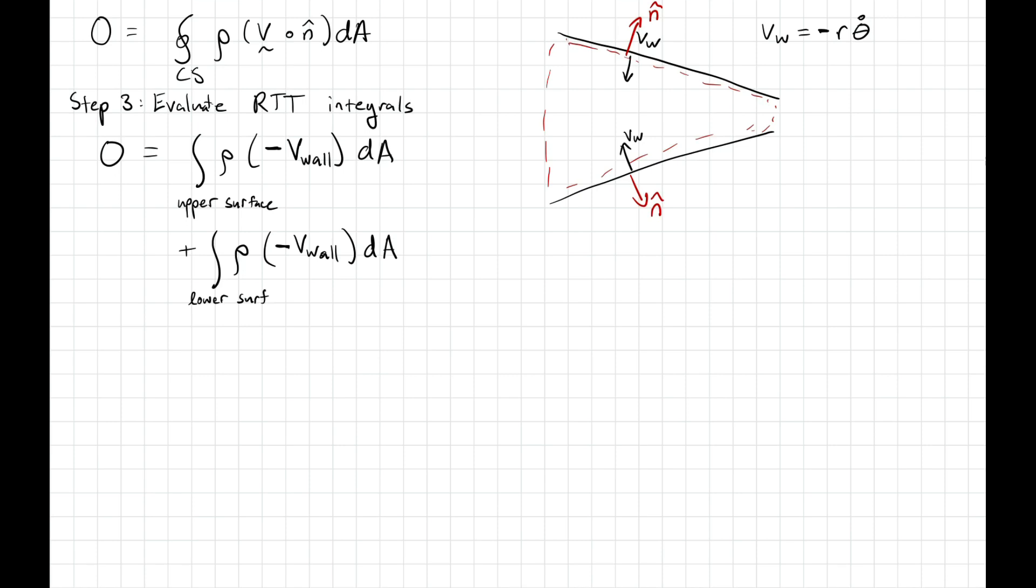And then the final integral to do would be the one where there's fluid passing out the exit. So we'll integrate over the exit rho times V dot N, which is positive V exit times dA. Again, because the exit is in the same direction as the outward facing unit normal at the exit.